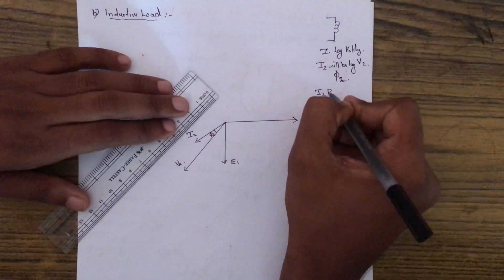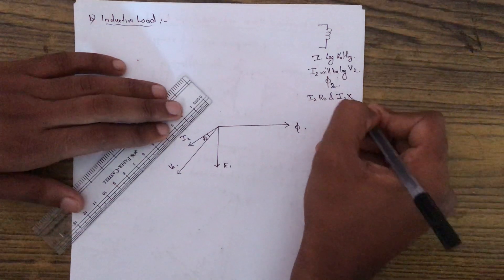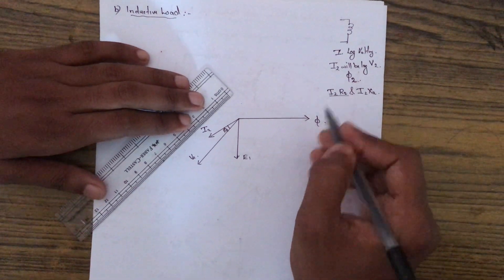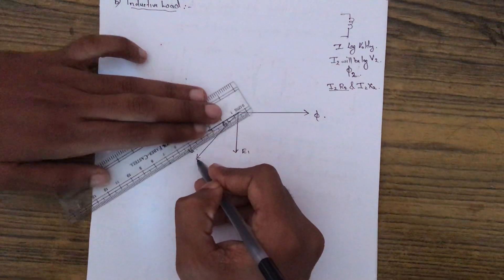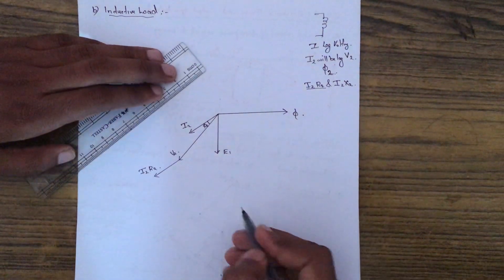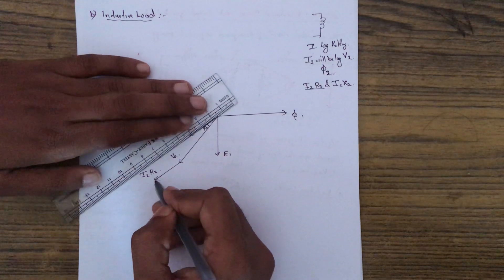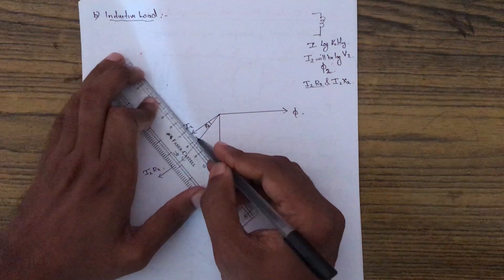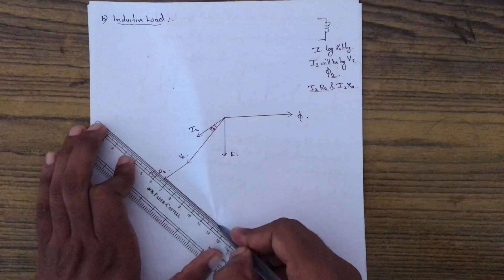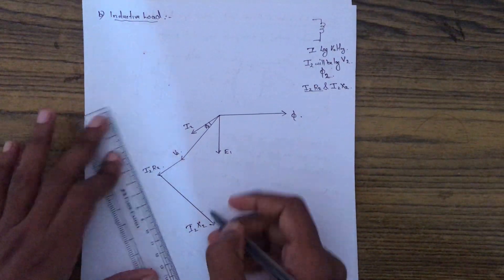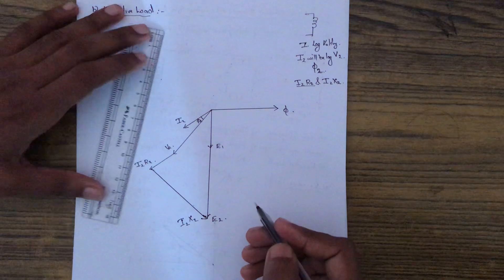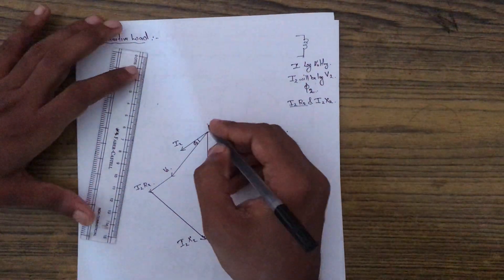Next I draw I2R2 and I2X2. I2R2 is a resistive component so it will be in phase with I2. I2X2 will be 90 degrees out of phase with I2, since X2 is a reactive component. The resultant of these components gives E2 for the secondary side.